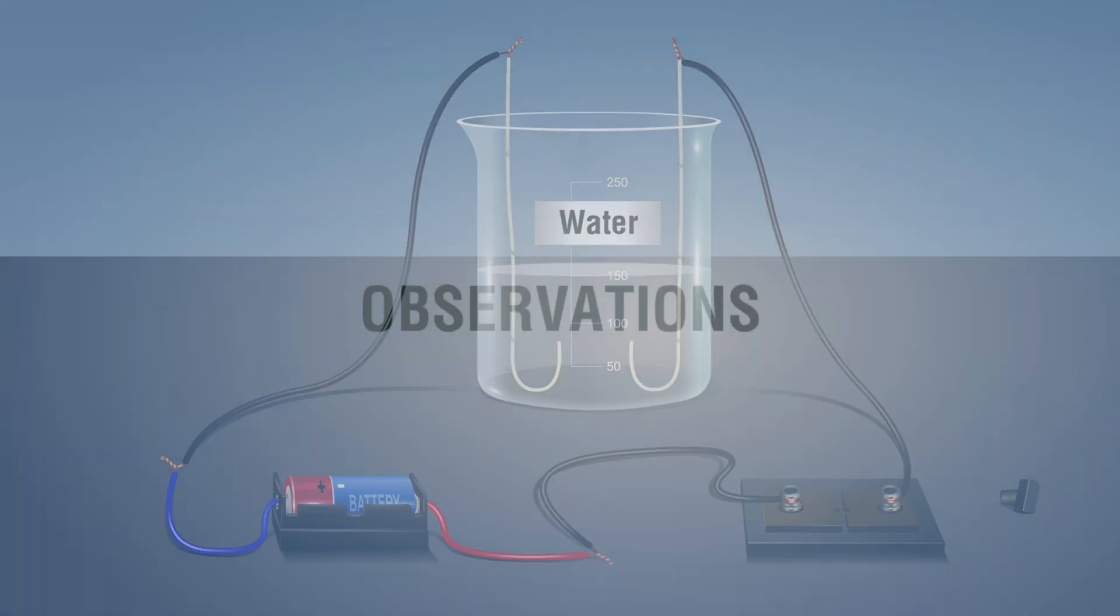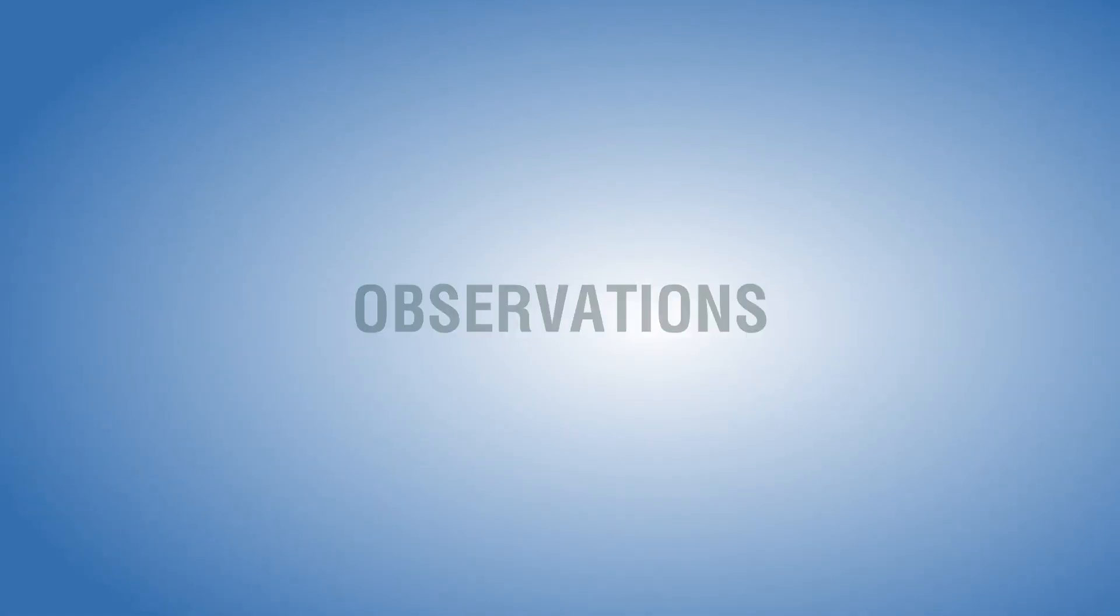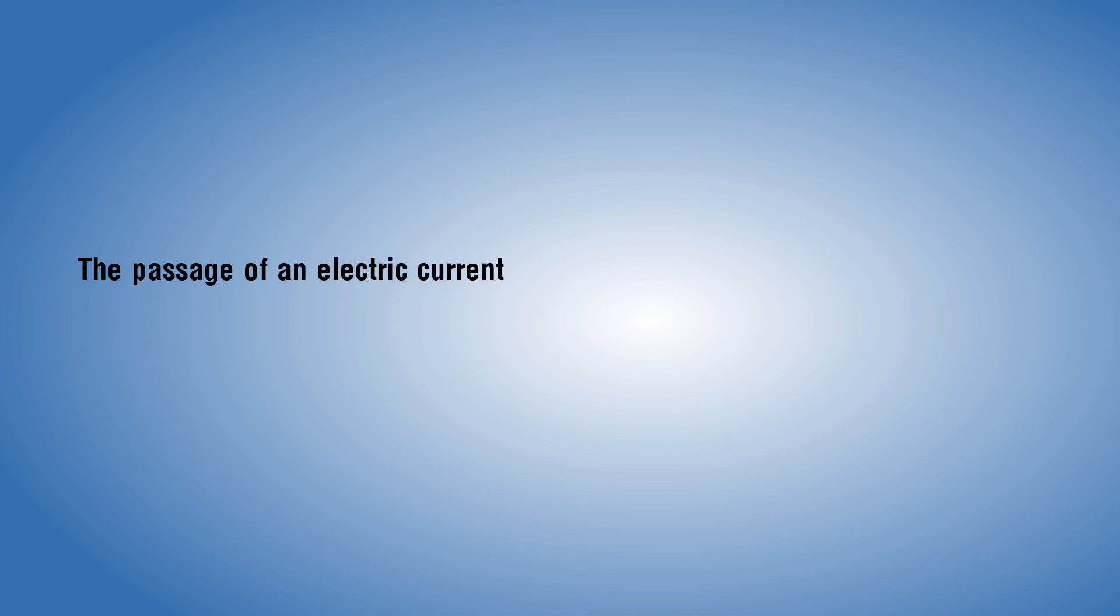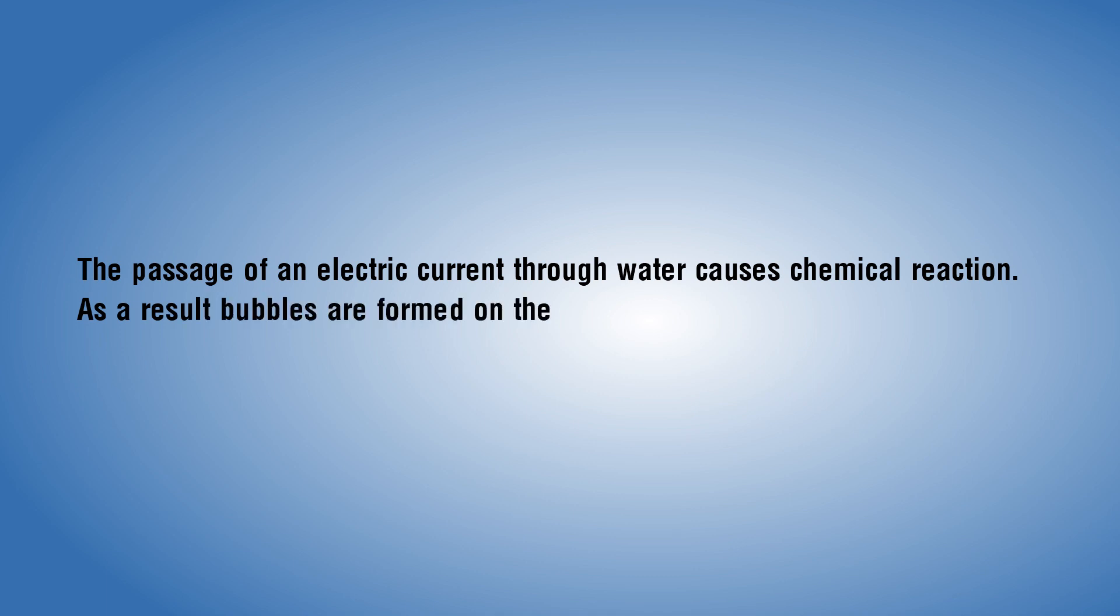Observations: The passage of an electric current through water causes chemical reaction. As a result, bubbles are formed on the electrodes. This is due to the chemical effect of electric current.